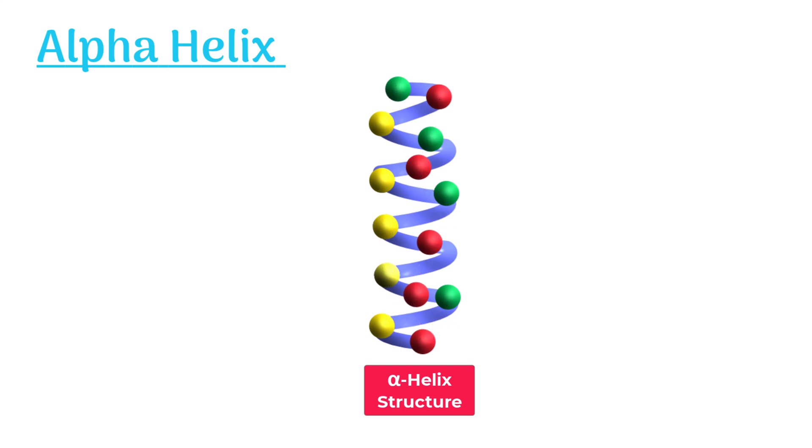Most alpha helices twist to the right side. Every complete turn of the helix contains 3.6 amino acids. Each amino acid is about 0.15 nanometer apart from the other amino acid. The height of each turn is approximately 0.54 nanometer.